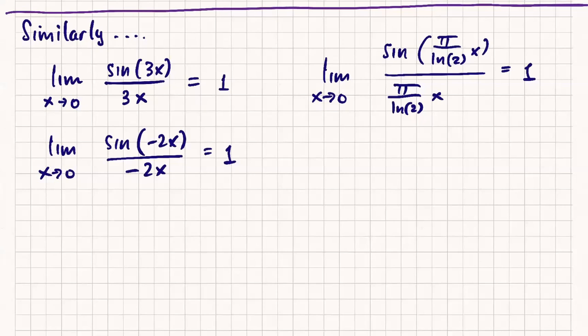So it doesn't actually matter. Pi ln over 2 is a constant. It doesn't matter what that coefficient is of x. So in fact, we are going to conclude the following. If I have limit as x goes to 0, sine of ax over ax, it doesn't matter what the value of a is, as long as it's not 0, this is equal to 1.